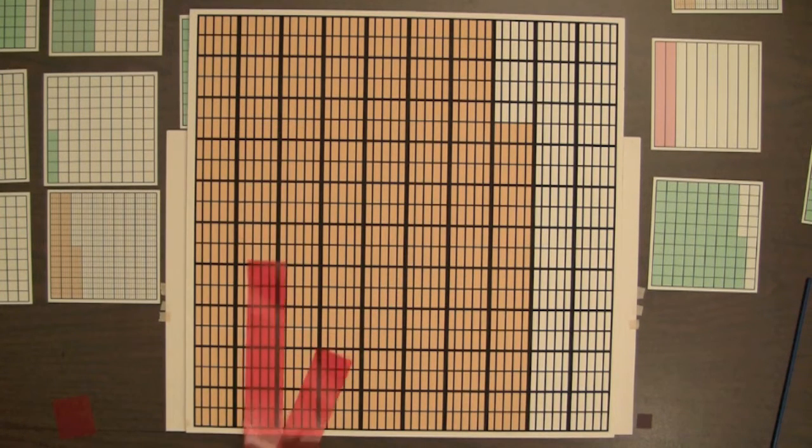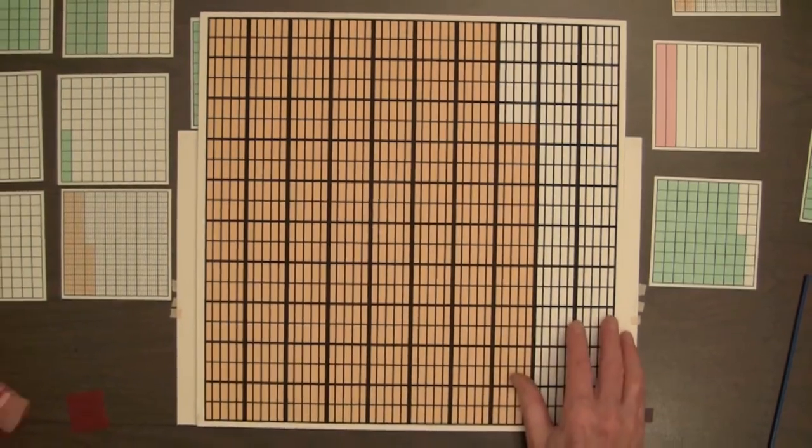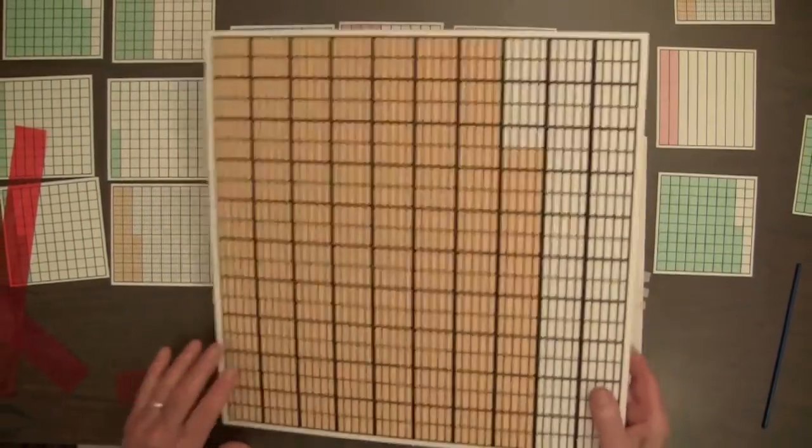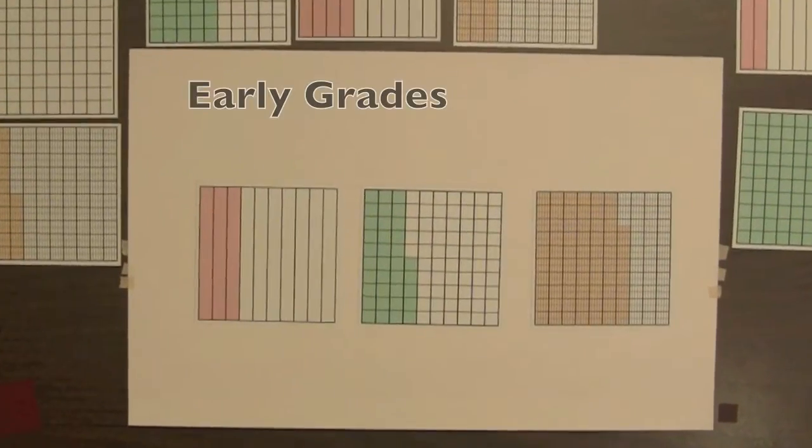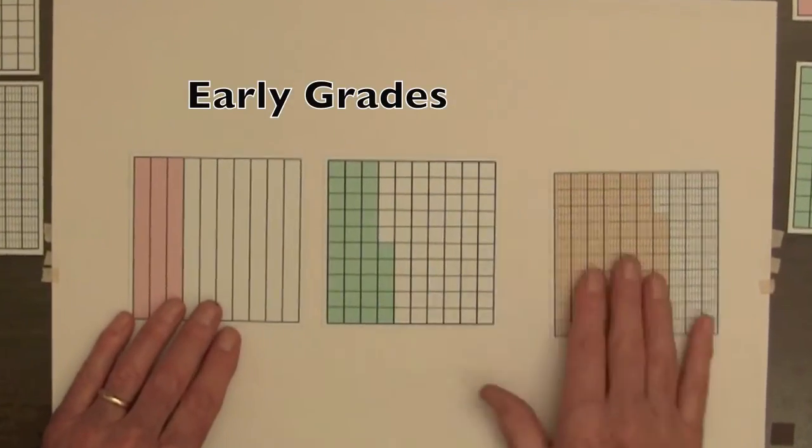Notice that we can describe these three types of squares by using just whole numbers. This provides a non-threatening introduction. For the early grades, it's best to start with just the red and green squares.